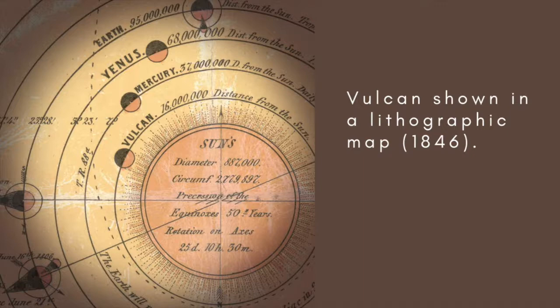Other amateur astronomers sent Le Verrier reports of having seen Vulcan, in some cases many years earlier, as it travelled across the face of the Sun. Sightings continued on and off into the early part of the 20th century.